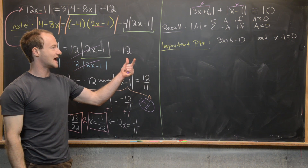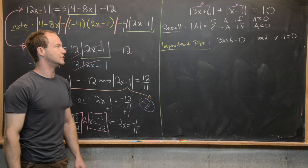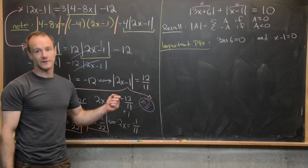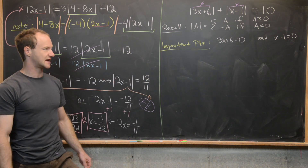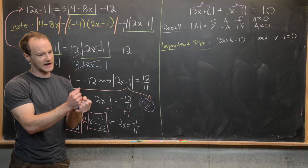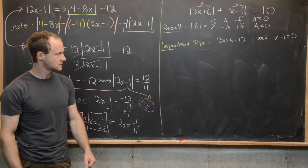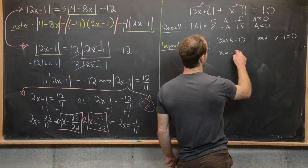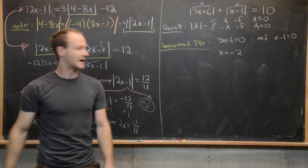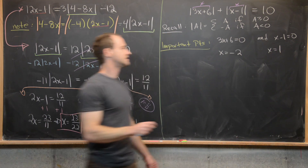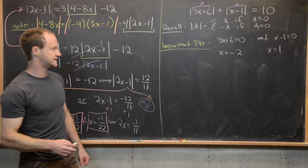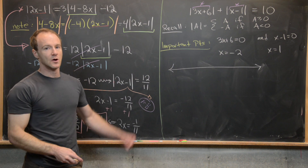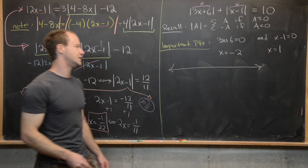If 3x plus 6 is greater than 0, the absolute value of 3x plus 6 is just 3x plus 6; if less than 0, the absolute value is the negative of that — and likewise for x minus 1. Finding where these equal 0 tells us the spot where each switches over. Solving gives x equals negative 2 and x equals 1. These are important points that naturally break the number line into three regions, with cuts at x equals negative 2 and x equals 1.